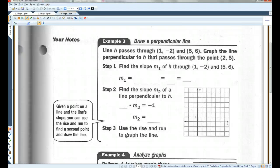Line H passes through one negative two and five, six. One negative two is here, and five, six is here. So, let me draw a straight line. Third time's a charm. Kind of straight. There we go. So, this is line H.